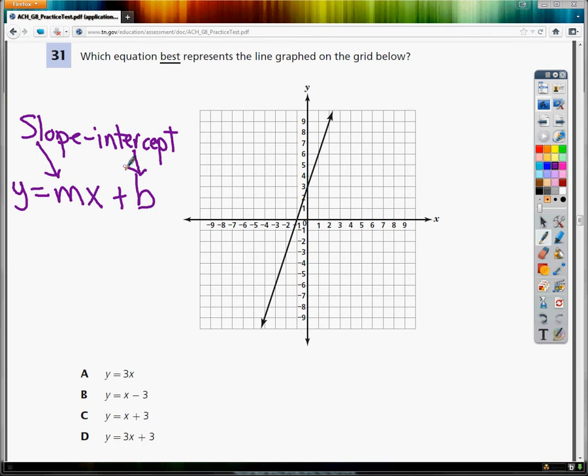The first thing I'm going to do is look for the intercept. The intercept is where the line comes in contact with the y-axis, because it's the y-intercept. Right here. So I'm looking for something that has plus 3 in it, because it crosses at plus 3.